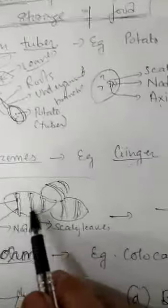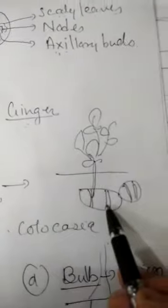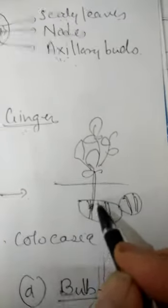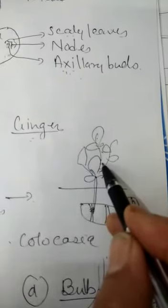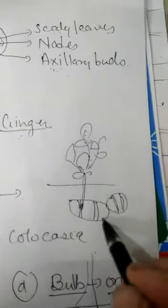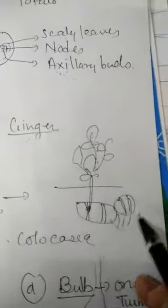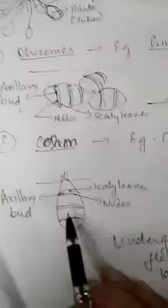If a piece of ginger is sown in soil under favorable conditions, the axillary bud gets activated and forms an aerial branch. Whatever food is prepared by this aerial branch is stored underground, producing more and more underground stem branches. This way, ginger grows horizontally below the soil. Therefore, ginger is a modification of underground stem for the storage of food, and it grows horizontally — this is the key distinction.